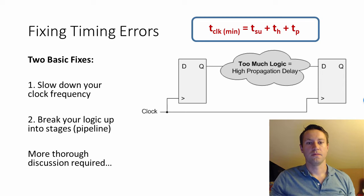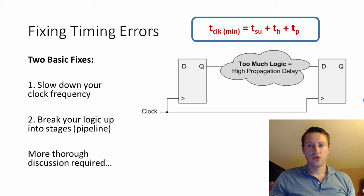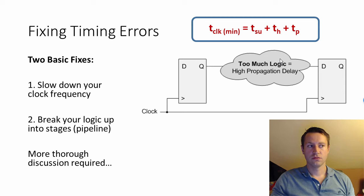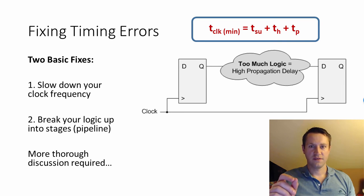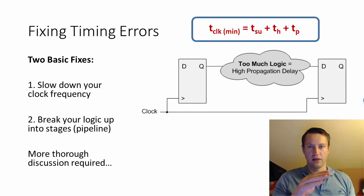You do have control over propagation delay. Specifically, if you have too much logic between two flip-flops, that's going to cause high propagation delay. Each gate is a lookup table, and each lookup table adds delay. So if you have a long if-else chain inside your VHDL or Verilog code — if this, else if this, else if this — that's a very likely spot where you're going to create a large amount of propagation delay, and that is something you can fix.